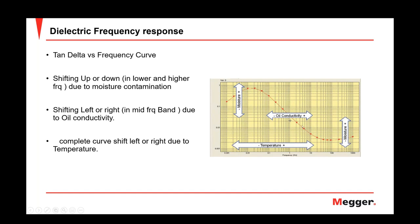Similarly, in the medium frequency region, there is a shift left or right that depends on oil conductivity. More conductivity — meaning worse oil — shifts the red curves to the right side. More to the left means drier oil with less conductivity, which is better oil in terms of insulation.